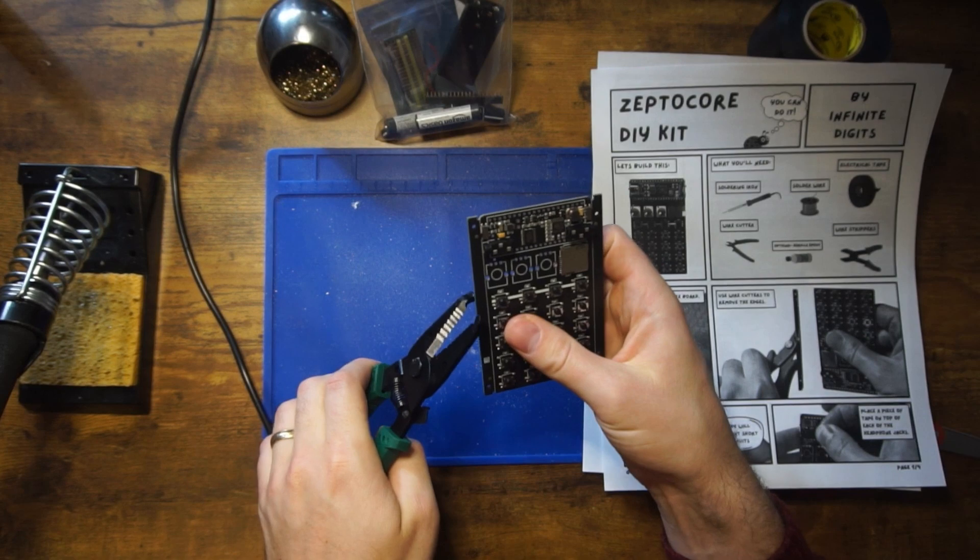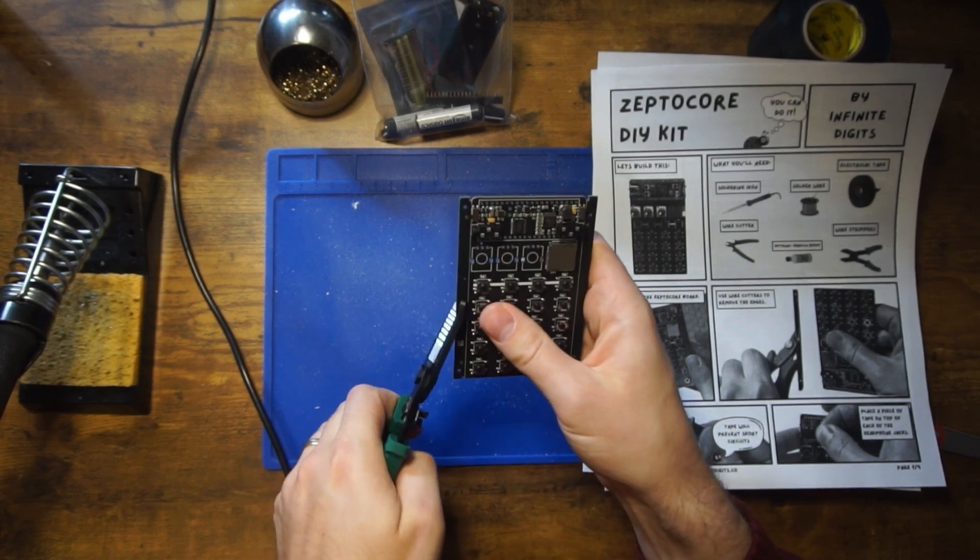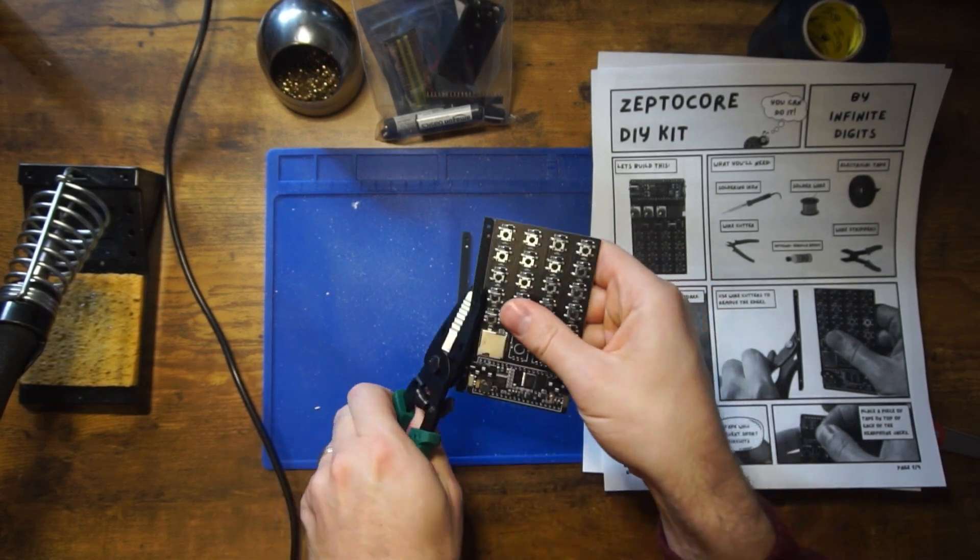First thing you need to do is unwrap the ZeptoCore board and then use some wire cutters or pliers to pull off the edges.